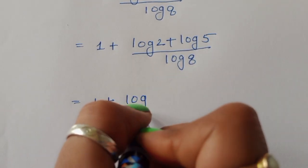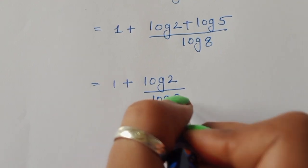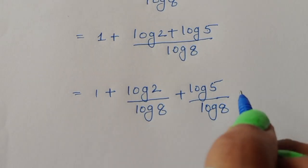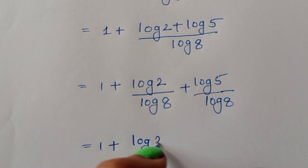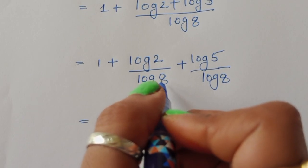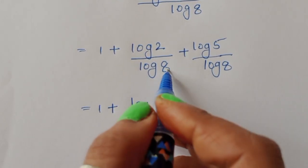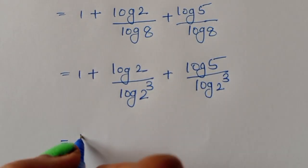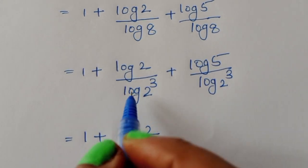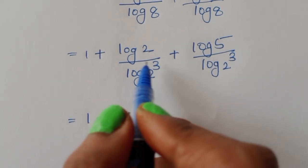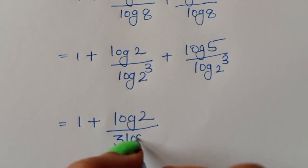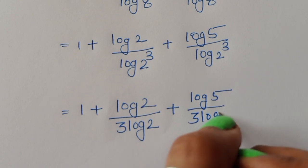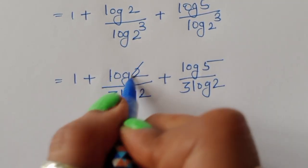So 2x = 1 + [log(2) + log(5)] / log(8). We separate this as 1 + log(2)/log(8) + log(5)/log(8). Now since 8 = 2³, we write log(8) = log(2³) = 3·log(2) using the formula log(a^b) = b·log(a). So log(2)/log(8) = log(2) / 3·log(2), and the log(2) terms cancel.